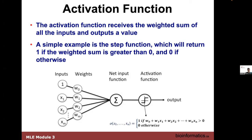The activation function: if you want a step function, if the sum is greater than 0.5 it gives you a one, and it gives you zero if it's less than 0.5. That's where you've got this threshold.